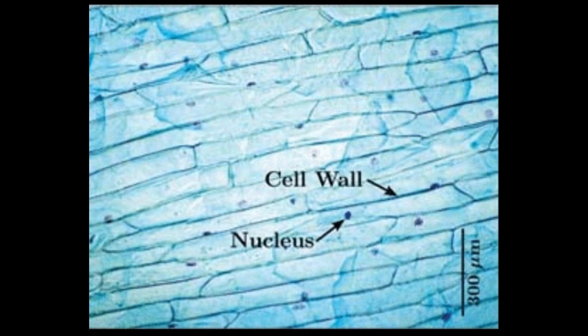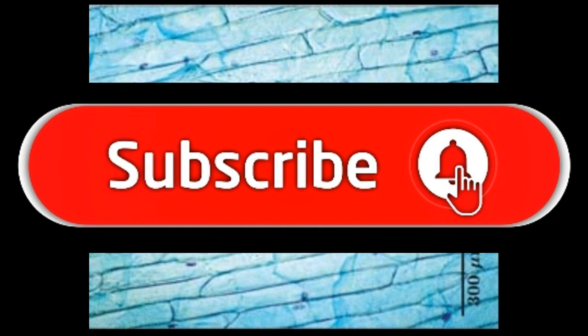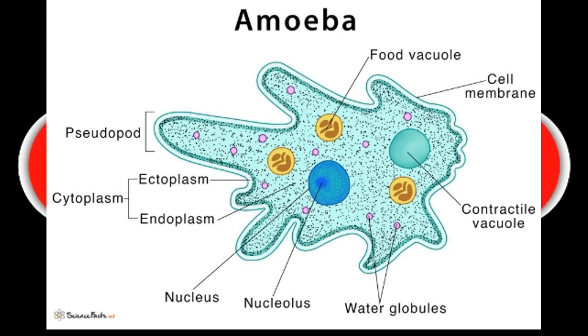In nature, there are millions of living organisms. They have different shapes and sizes, and vary in the number of cells they contain — different shapes, different sizes, and different numbers of cells.